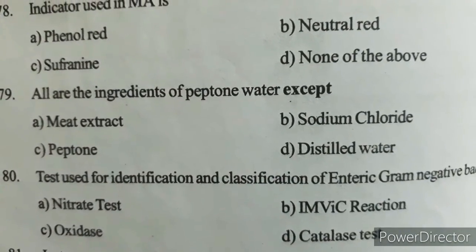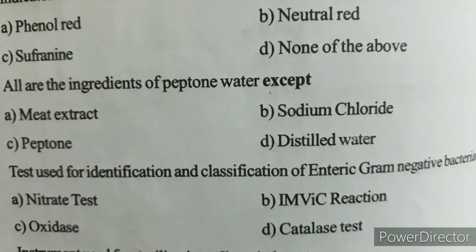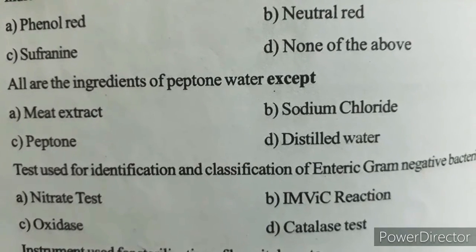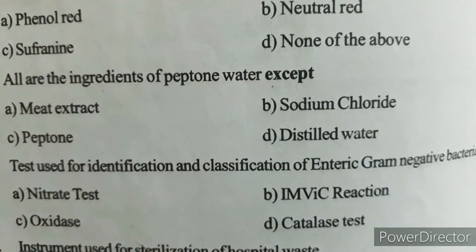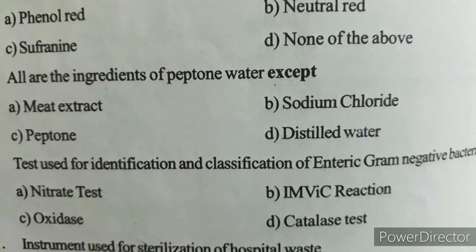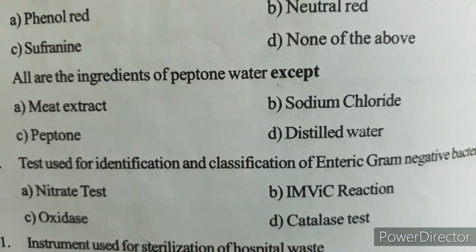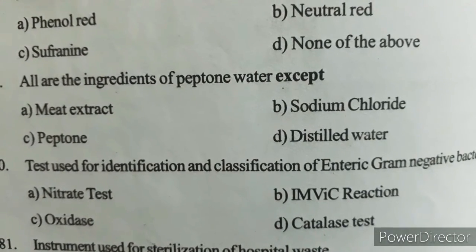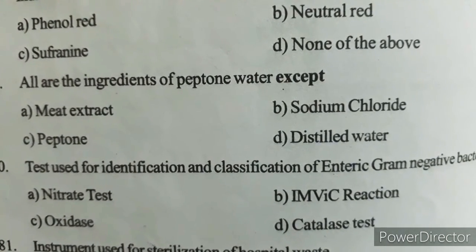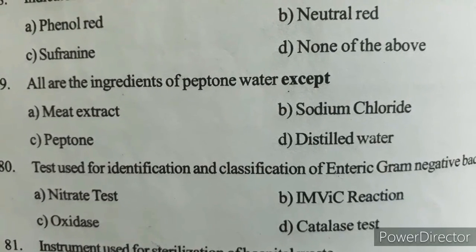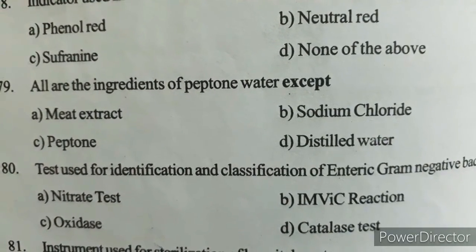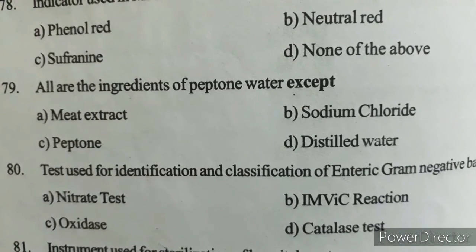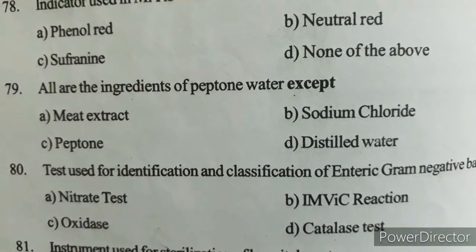Next question: The test used for identification and classification of enteric gram-negative bacteria is? Option A) Nitrate test, Option B) IMViC reaction, Option C) Oxidase test, Option D) Catalase test. Correct answer: Option B — IMViC reaction. IMViC stands for Indole, Methyl red, Voges-Proskauer, and Citrate tests.